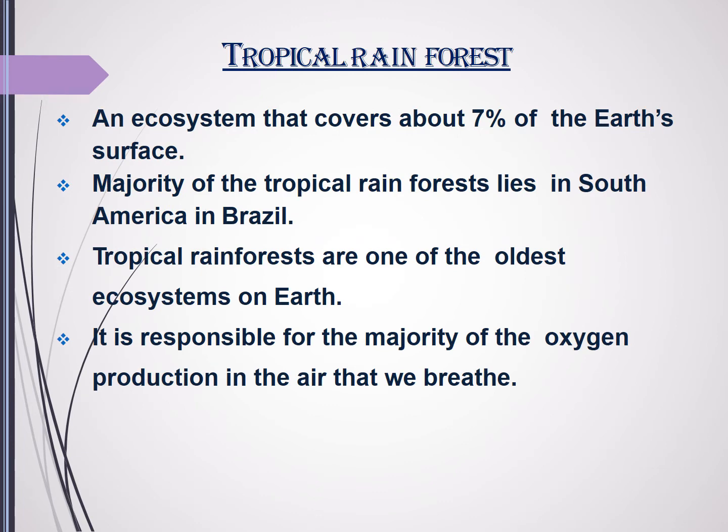Next we will move on to the tropical rainforest. It covers 7% of the earth's surface. The majority of tropical rainforest can be found in South America, in Brazil. They are one of the oldest ecosystems on the earth and are responsible for the majority of oxygen production in the air.